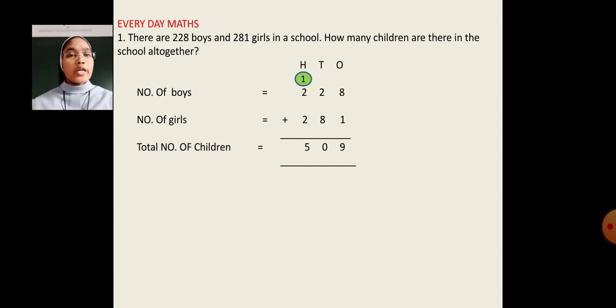Number of boys, 228. Number of girls, 281. Let us start adding from 1's place. 8 plus 1, 9. 2 plus 8, 10. 10's you have to write 0. 1 will carry 100's place. 1 plus 2, 3. 3 plus 2, 5. So, the total number of children, 509.